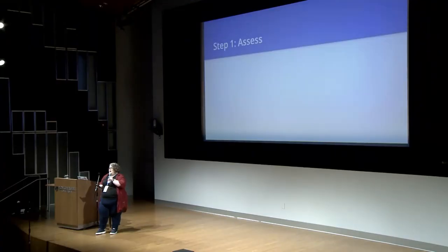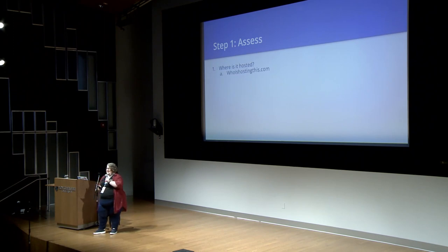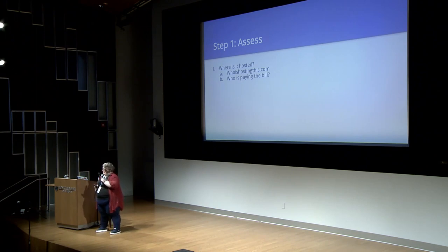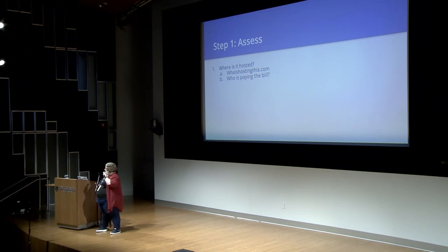So what do you do with all that? Now we have vocabulary — what do we do? When you log into the WordPress website, you've got to assess what you have, figure out what's going on. Step one: where is it hosted? You can use whoishostingthis.com — literally a website — you type in the domain name and it'll make its best guess at who is hosting it. It's not 100% accurate but it's pretty good. Also, somebody's paying that hosting bill on a credit card. Figure out whose credit card it is; they'll be able to tell you who's hosting it — whether it's GoDaddy, Nexus, Bluehost, or any of those places.